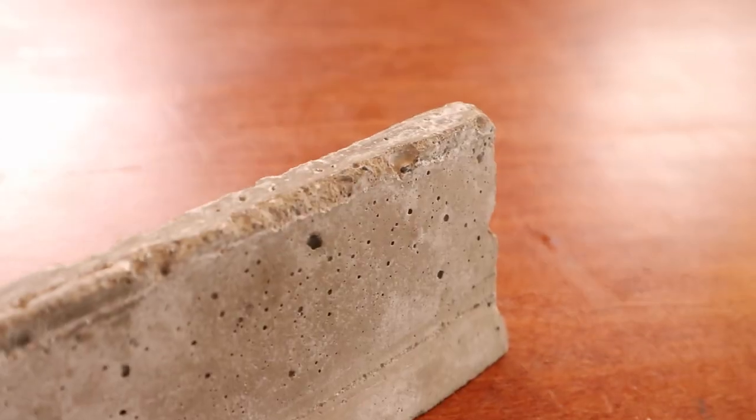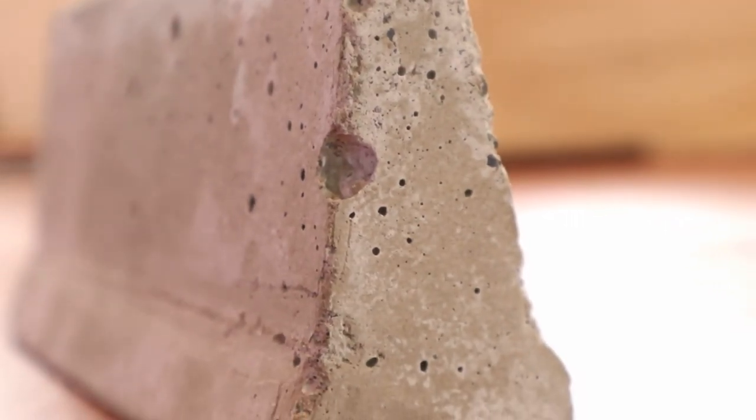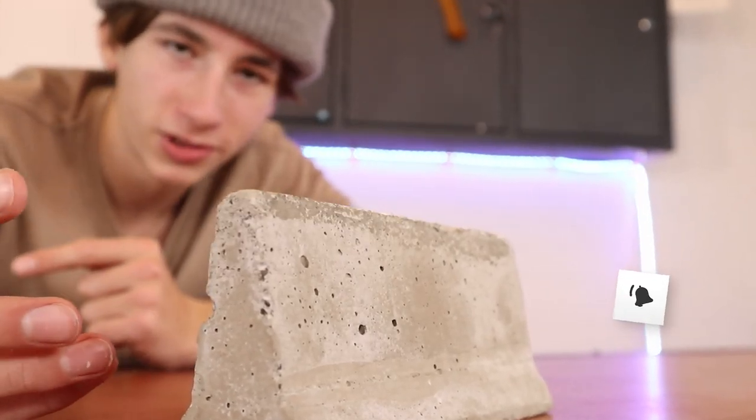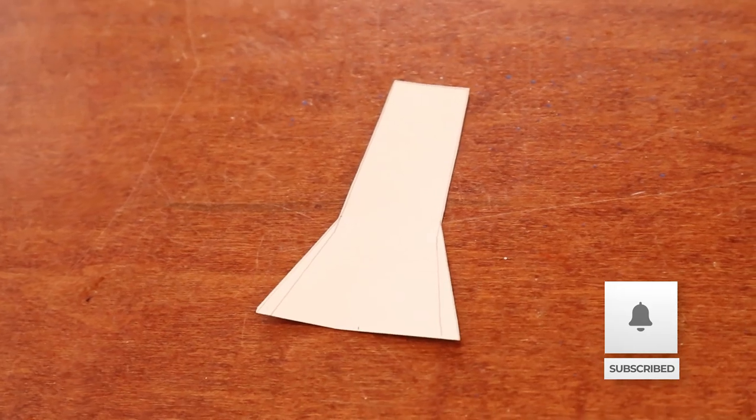If you have been watching the channel for a while, you might remember I made this. So this concrete barrier has quite a few chips in it, so I really wanted to make a new one. So that is what we're doing today. In order to make this, we need to make a mold. I took a piece of paper and cut out this little template piece. So this is going to be the end of our barrier.